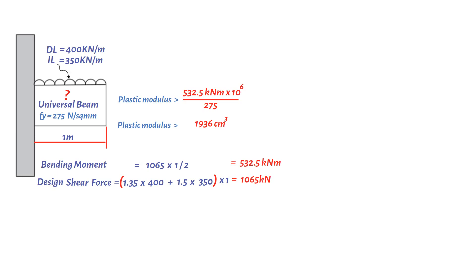Therefore, the suitable section with classification would be 533 by 210 by 82 UB, with plastic modulus 2060 cubic centimeters and class 1.